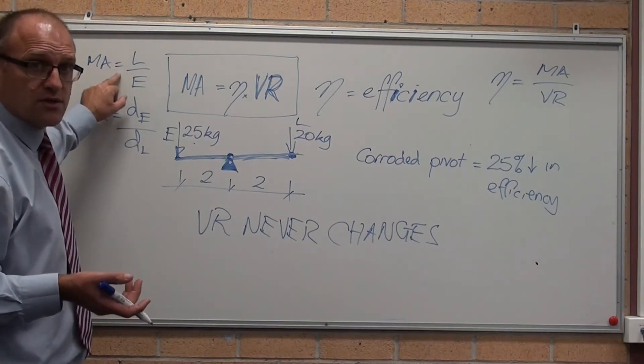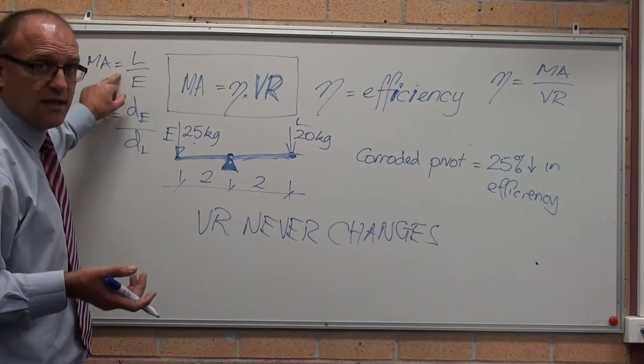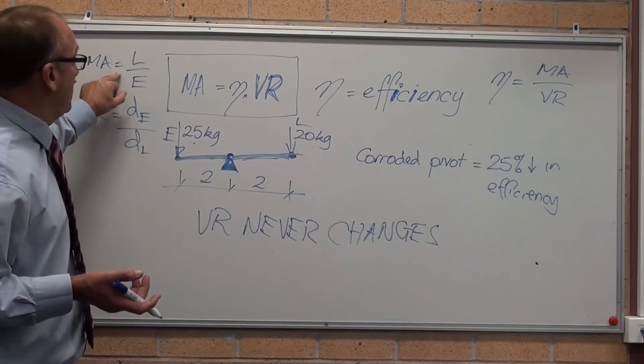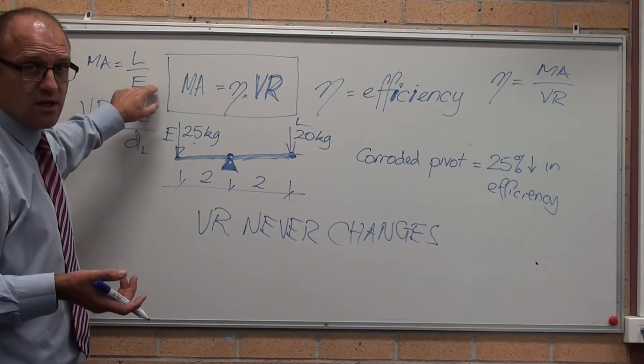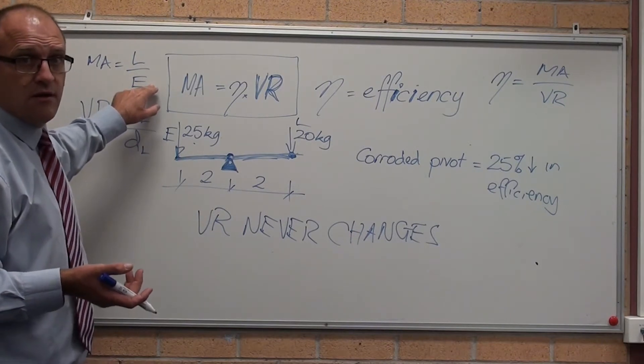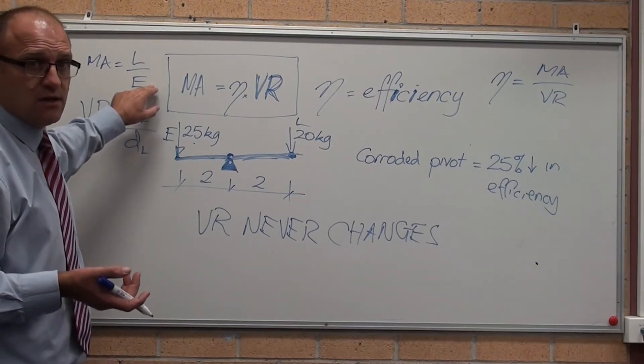If it's a catapult designed to accelerate velocity at the expense of load, then you might have 100 kilograms for 2,000 kilograms of effort. Mechanical advantage is significantly lower than one.